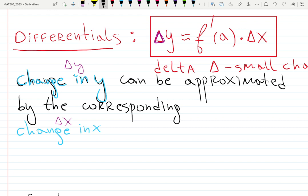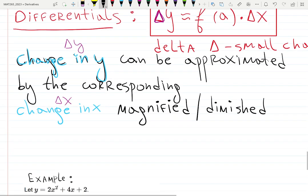By the corresponding change in x. Change in y and change in x. That's delta x. They can be approximated by change in x. But what kind of change? Multiply by a derivative. So, by a factor of f prime. But there's also an interesting word here. Magnified or diminished. Those are GRE words. By a factor of f prime.